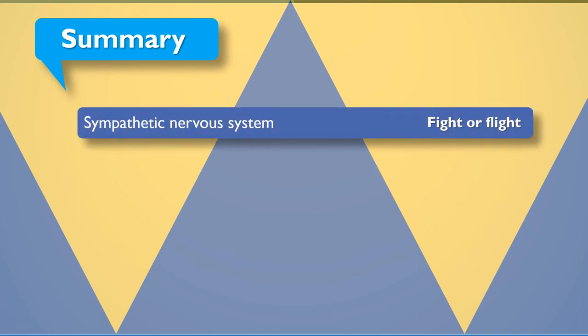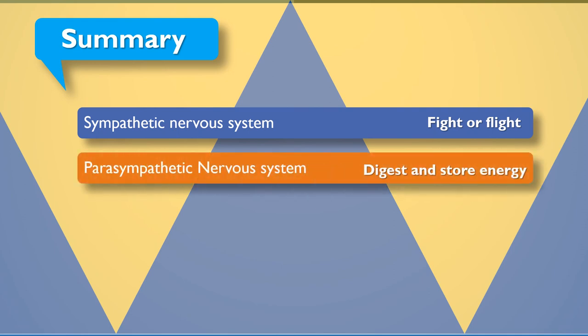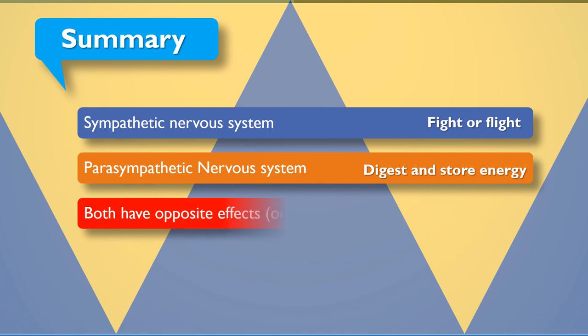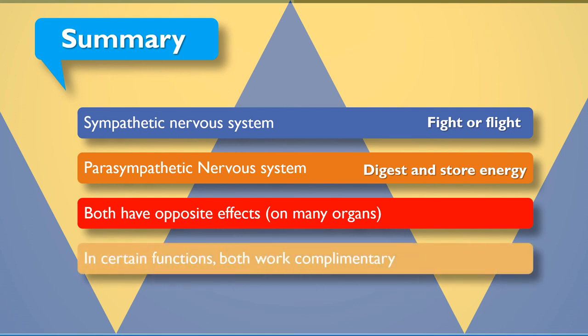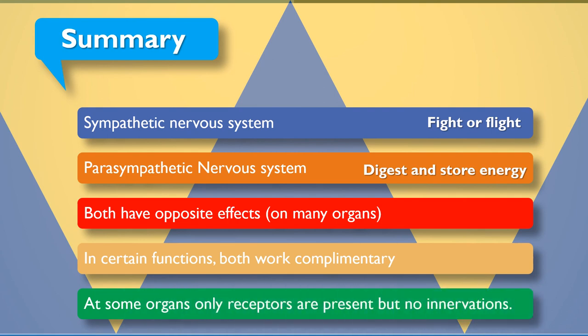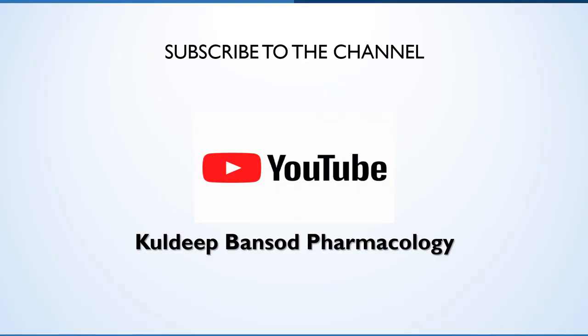Sympathetic helps with fight-or-flight responses, whereas parasympathetic digests and stores energy. Both systems have opposite effects on many organs. In certain functions, both work complementary to each other. At some organs, there is no innervation from these systems, but the receptors are still present in those cells. If you like this video, don't forget to subscribe to the channel. Till then, happy learning!